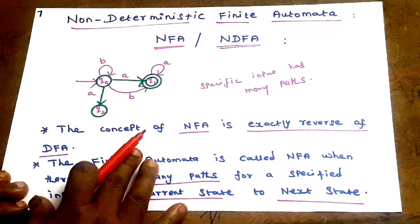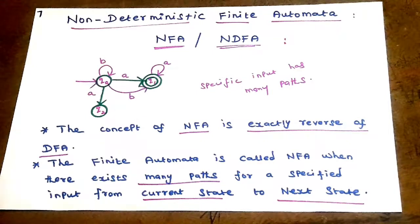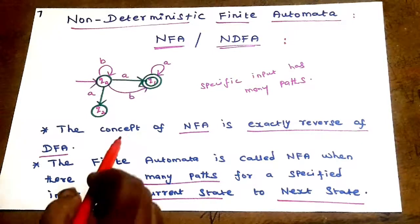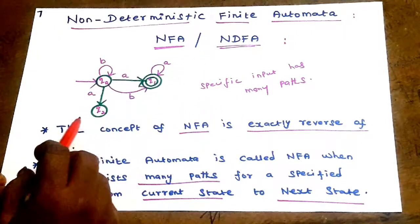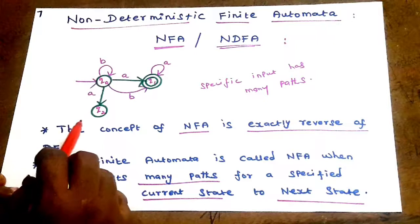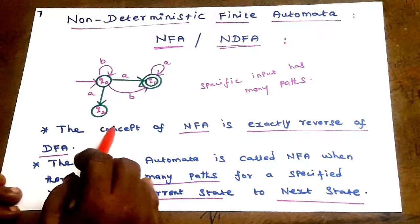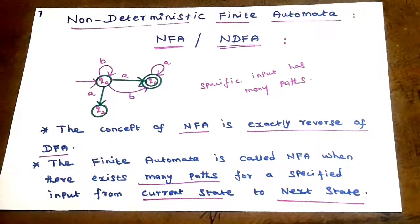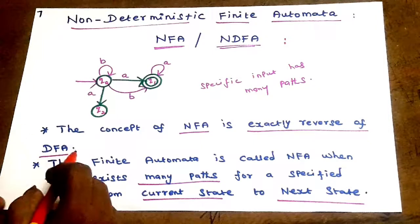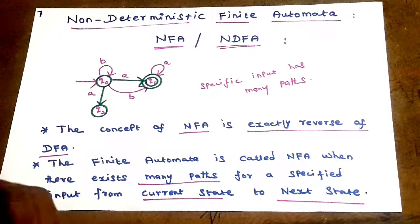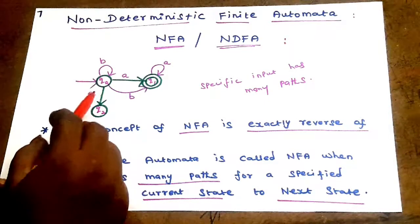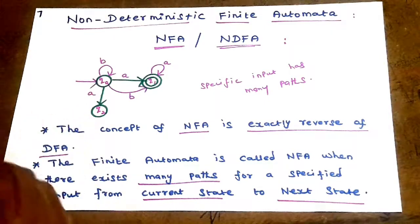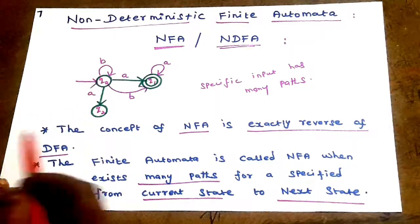Next is NFA — Non-deterministic Finite Automata, also called NDFA. The concept of NFA is exactly opposite to DFA. In DFA, a specific input from a current state leads to only one specific next state.